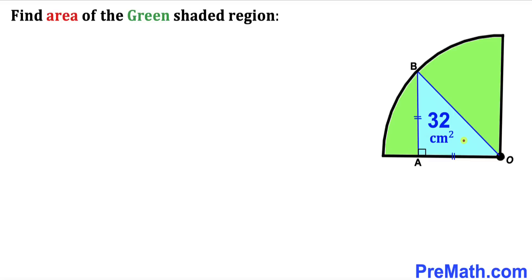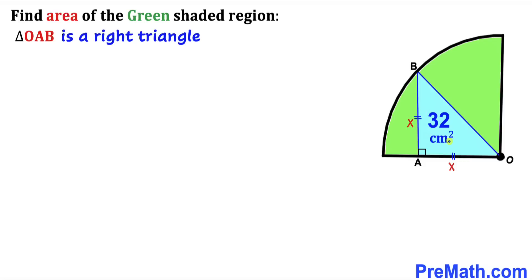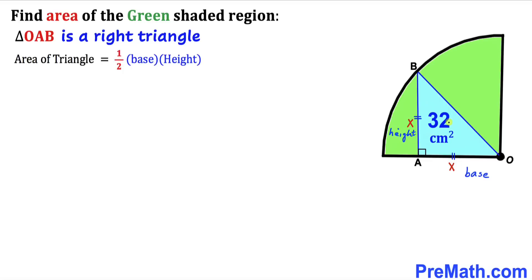Let's focus on this isosceles triangle OAB — since this side equals this side, let me call each of these sides x units. We know that OAB is a right triangle. Recalling the area of a triangle formula: area = ½ × base × height. In our case, base is x and height is x as well, and the area of the triangle is 32. So we get: 32 = ½ × x × x.